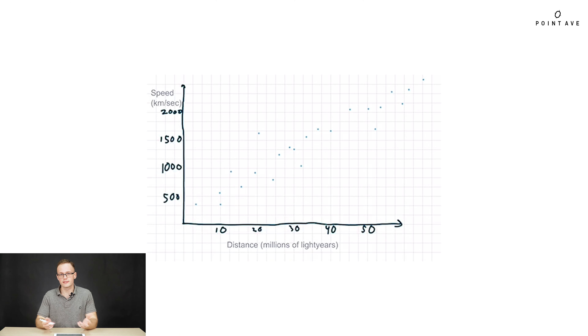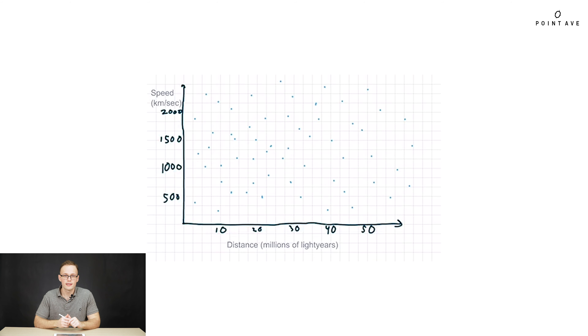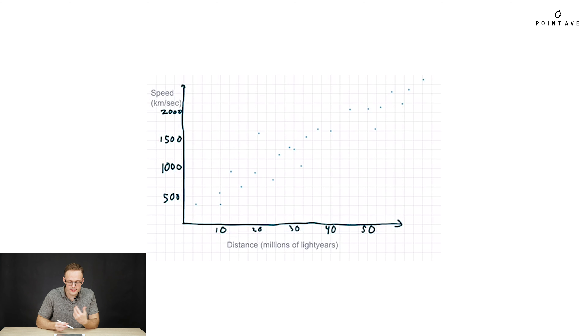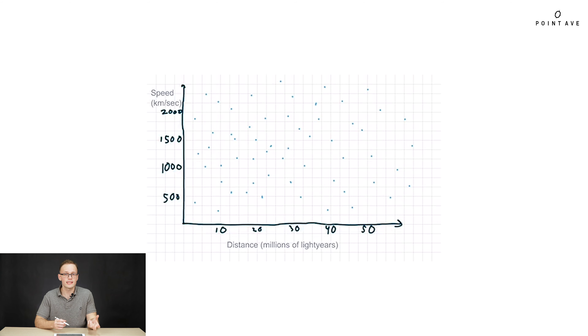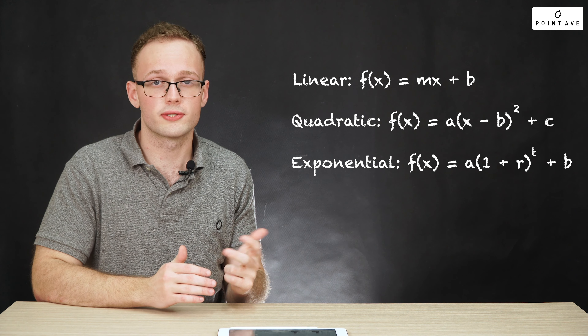First, is there a relationship between our two variables? The problem statement tells us there is. But as a counterexample, consider a scatter plot where there is clearly no relationship between x and y. Comparing the two, it should be easy to see what related versus unrelated variables look like. Common model forms — and especially the ones you'll be asked to use on the SAT — are linear, quadratic, and exponential.